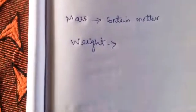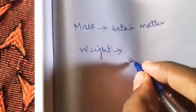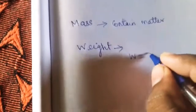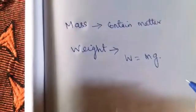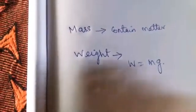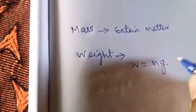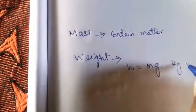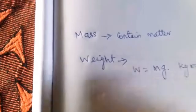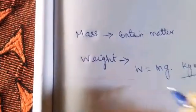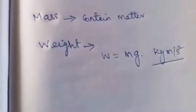Then, weight. Weight is equal to w = mg. The unit of weight is kilogram meter per second squared (kg·m/s²).